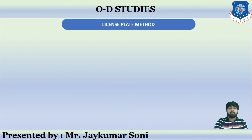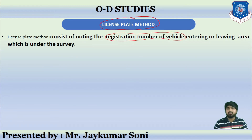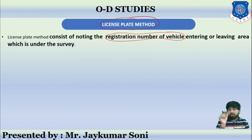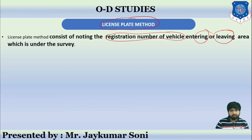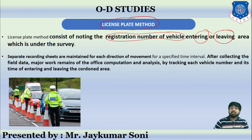Then comes another method — the license plate method, also called the registration plate method. In this method, the registration number of the vehicle, say GJ1V2501, is recorded. People will sit at the entrance or at the exit of the particular area and they will note down the registration plate number. And at the end of the survey, they will calculate the total number of vehicles that have crossed.